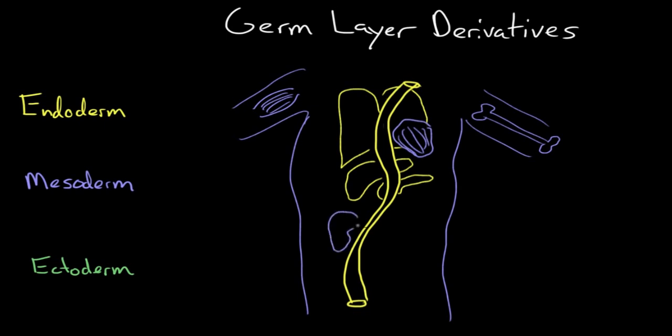And then tucked away down here in the abdomen and pelvis we have the kidneys, and the bladder, and our ovaries or testes. And moving on to the ectoderm.